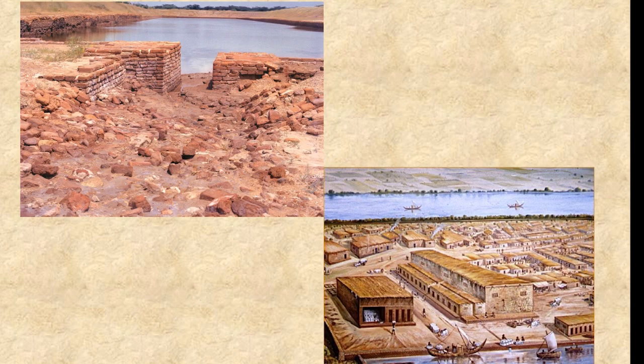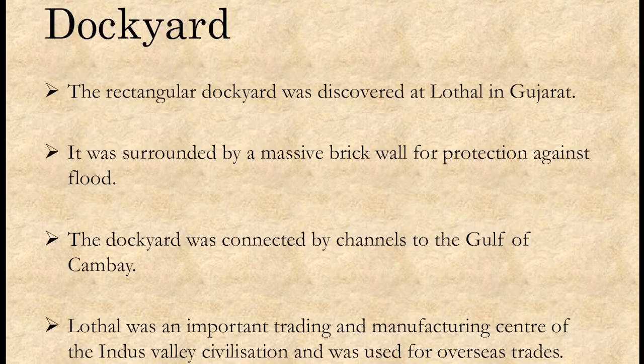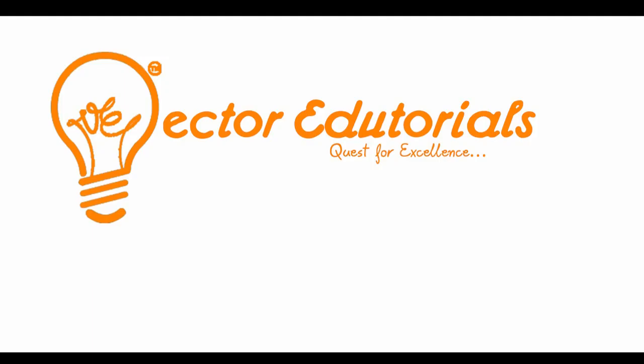Next is the dockyard. Lothal in Gujarat was the most important trading and manufacturing center. This dockyard was found at Lothal and was connected by channels to the Gulf of Cambay, today known as the Gulf of Khambhat in the Arabian Sea. Lothal dockyard played an important role in developing trade relations with Egypt and Mesopotamia.